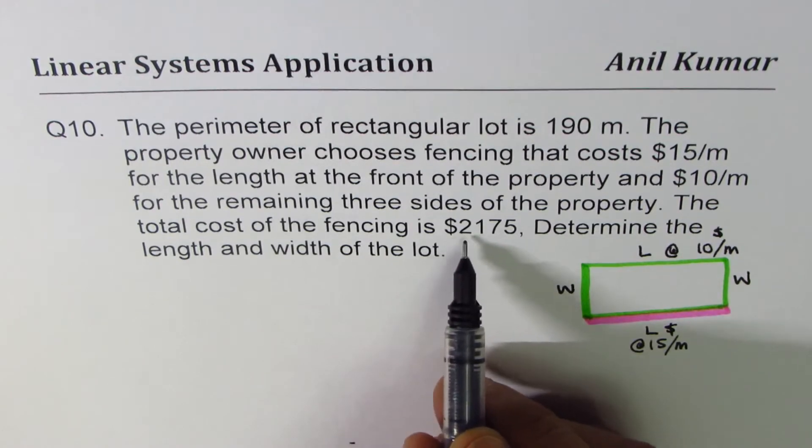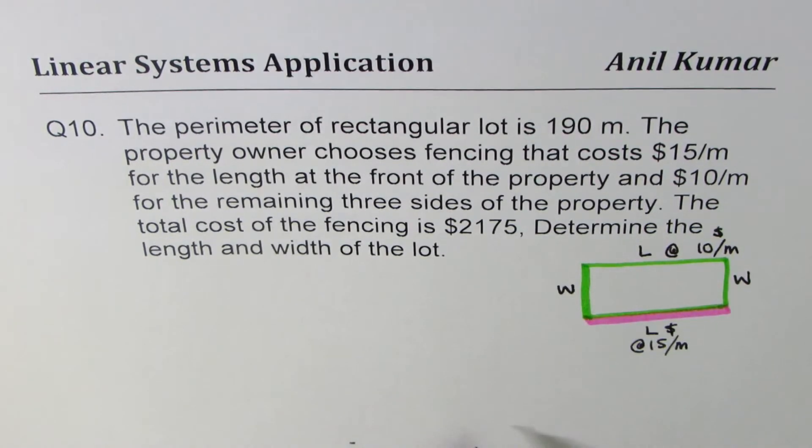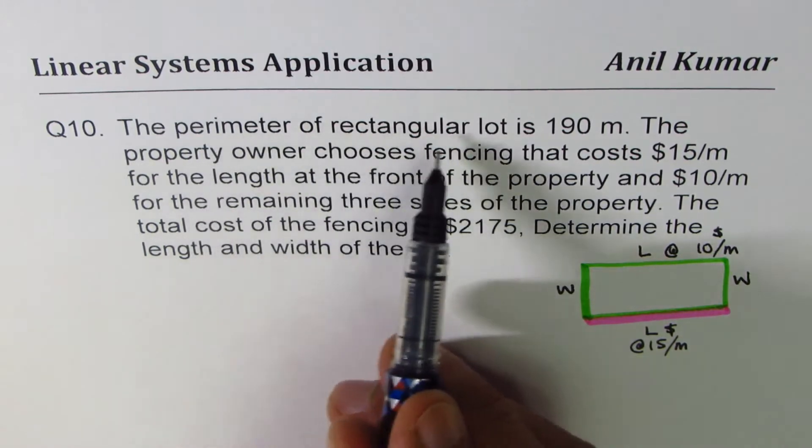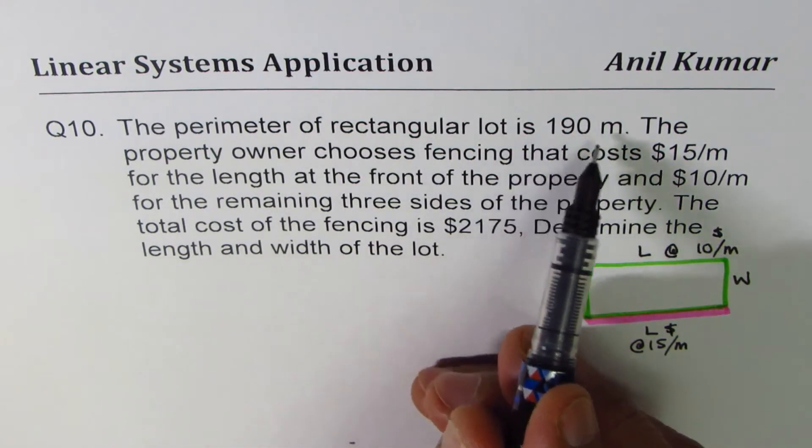Total cost is given to us as 2175. We are also given that the perimeter of the rectangular lot is 190 meters.